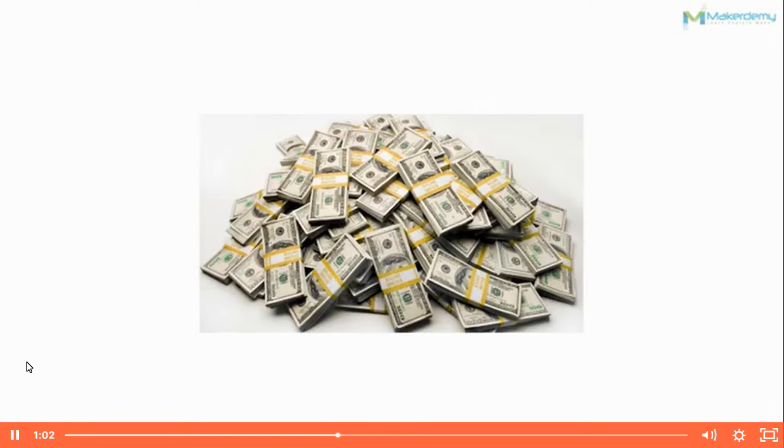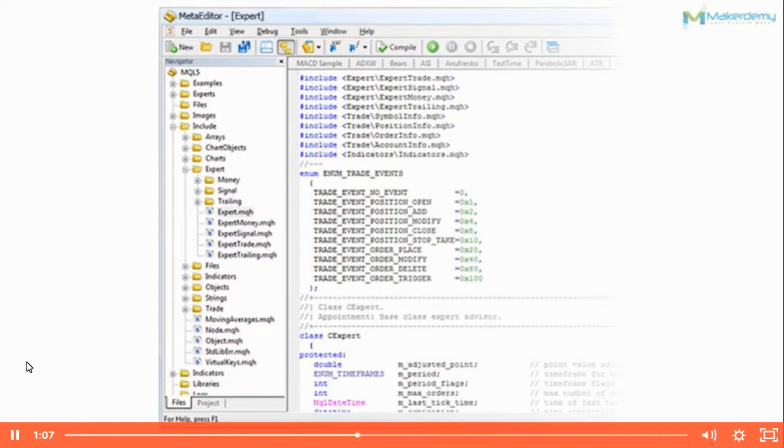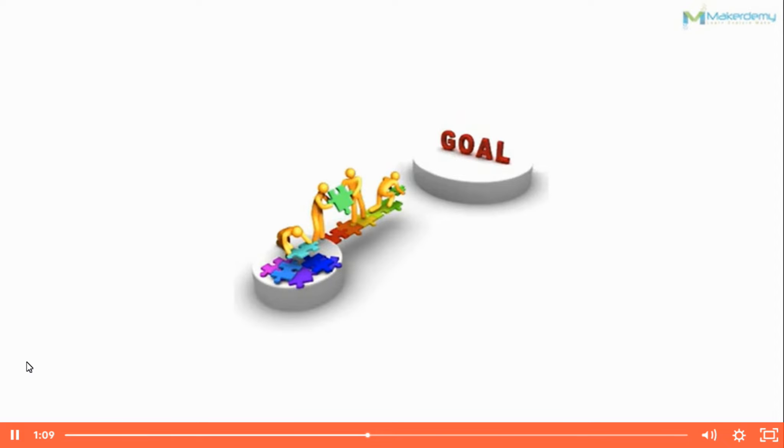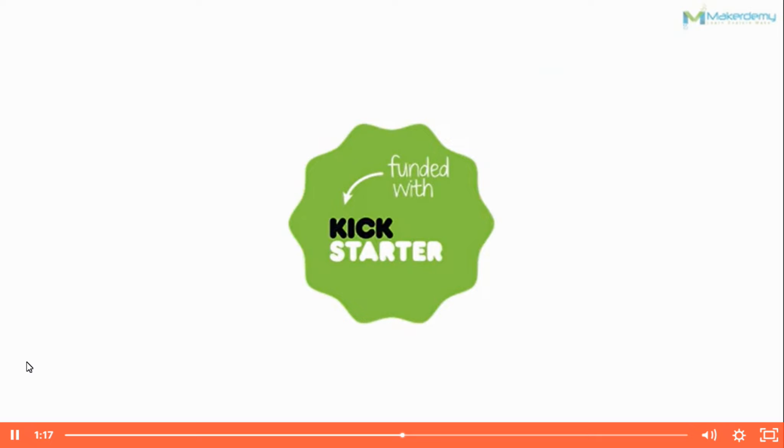However, all robots on the market seem to be expensive, hard to assemble, trouble to wire and complex to program. Our goal is to create an affordable, easy to use and open source robot for every kid. That is the AMBOT, which is crowdfunding on Kickstarter.